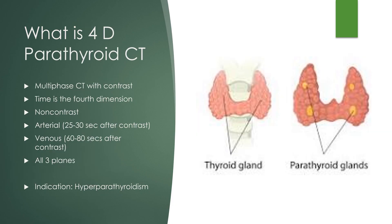So what is 4D parathyroid CT? It's really just a multi-phase CT of the neck with contrast. Time is considered to be the fourth dimension of the 4D. So the three phases — just like with all other multi-phase scans — there's usually a non-contrast set, an arterial set that's 25 to 30 seconds after contrast injection, and a venous phase which is 60 to 80 seconds after contrast injection, and you do these in all three planes of imaging: axial, sagittal, and coronal. The indication for these 4D parathyroid CTs should be known hyperparathyroidism, usually diagnosed by hypercalcemia.